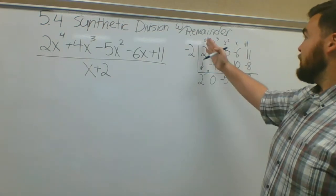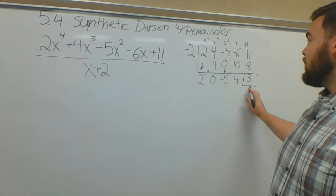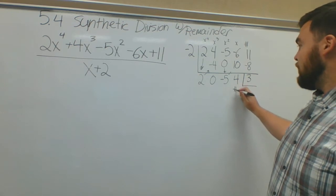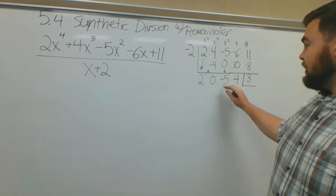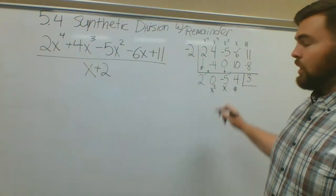First, let's worry about this part. I said before in 5.3 that it's the same as these numbers, it's just shifted to the left one. So now this is my remainder, this is my constant term, this is my x term, this is my x squared term.